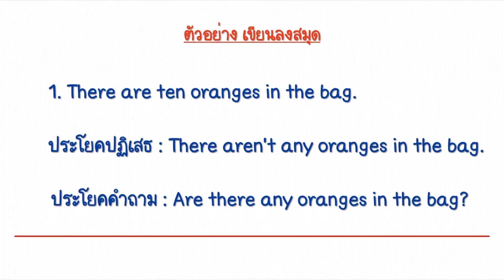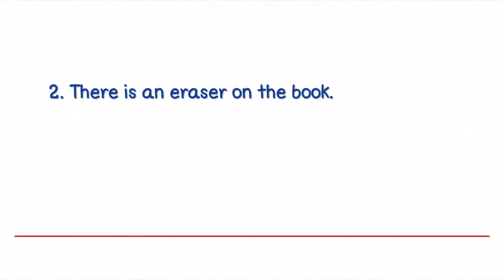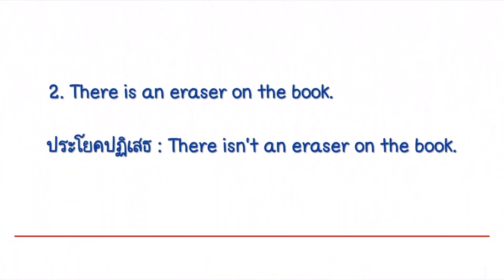อย่าลืมขีดเส้นใต้ด้วยปากกาสีแดงนะคะ จะทำให้งานนักเรียนเรียบร้อยขึ้นมา 100 เท่าเลยค่ะ และต่อมานักเรียนก็ลองทำข้อที่ 2 ตามโจทย์ที่คุณครูอ้นกำหนดให้ใน 5 ข้อนะคะ ตรงนี้เป็นเพียงแค่ตัวอย่างเท่านั้นค่ะ